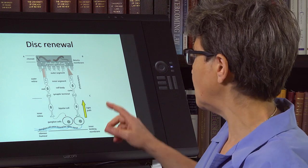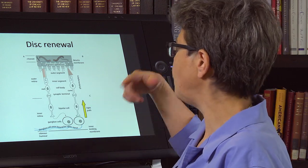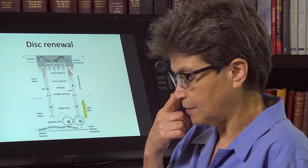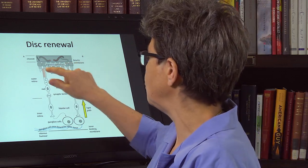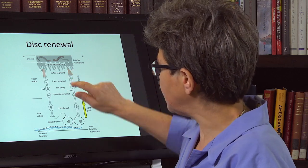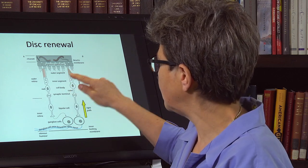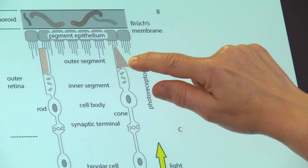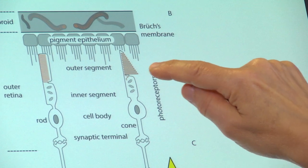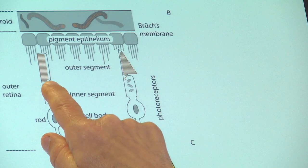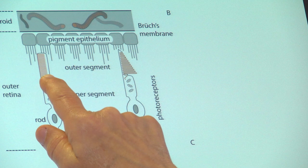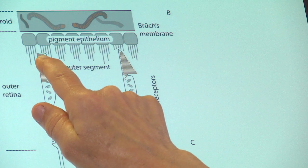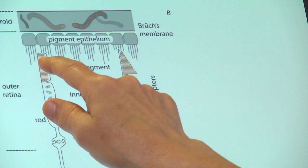Another feature that is prominent in the reaction to damage is that these discs, which are created here—so the discs are created here. The youngest disc is here, and then it just progressively moves up. That's true for both the cones and the rods. The discs are produced here, and then as they get older, they move progressively up.